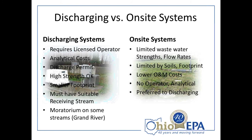There are advantages to both discharging systems and on-site systems. A discharging system requires a licensed operator under Ohio EPA's operation rules 3745-7, has analytical costs, requires a discharge permit, and can handle high-strength waste. The system can have a smaller footprint than an on-site system, but you must have a suitable receiving stream. For example, in my district there is a moratorium against new discharges for the Grand River Watershed, so be aware of any restrictions on your watershed.